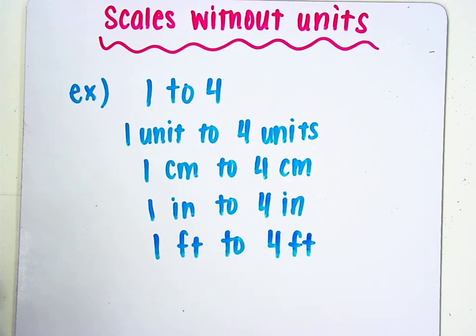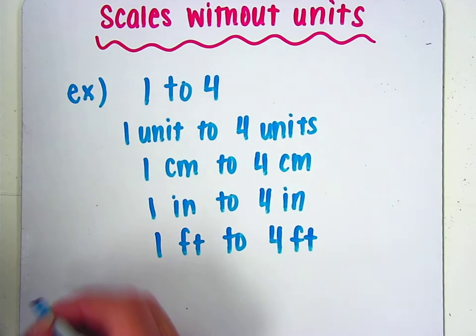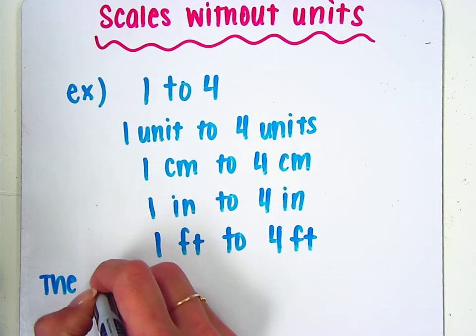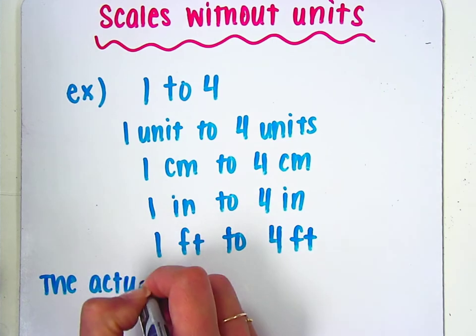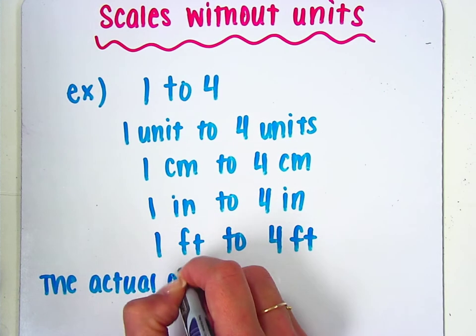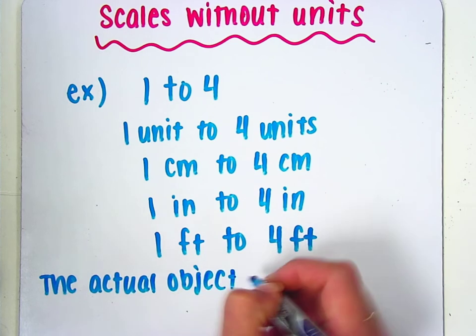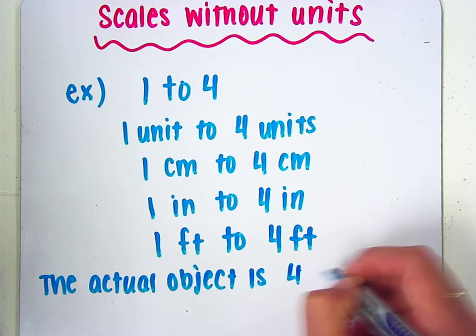So anytime you see a scale without units, you must assume that the units represented by those numbers are the same. What this is also telling us is the actual object is then four times bigger than the drawing.